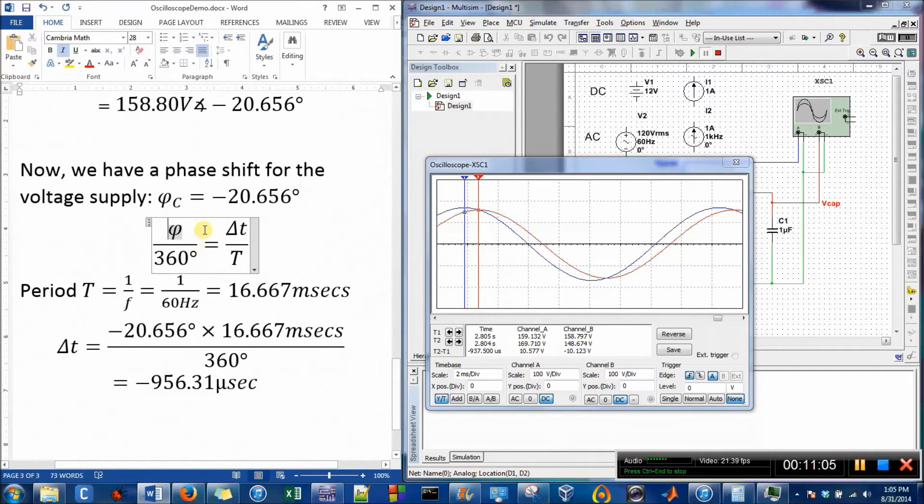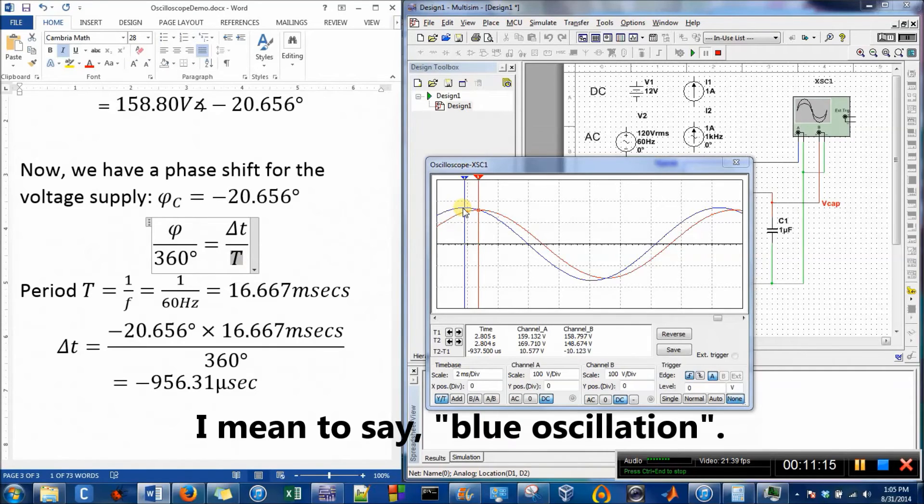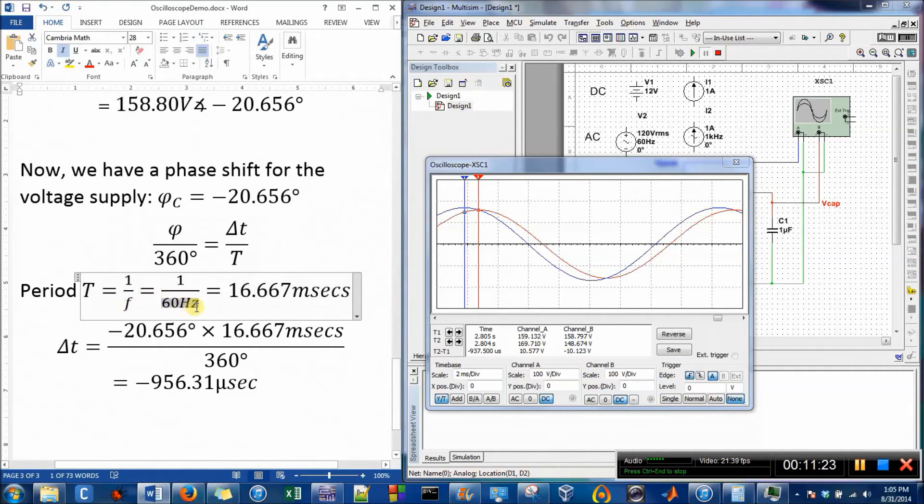When I look at that, the phase shift is in proportion to that time difference. This is the period—from the top of the blue circle to the top of the blue circle. If you measure that in time, that would be the period, but it's also just related to our frequency.